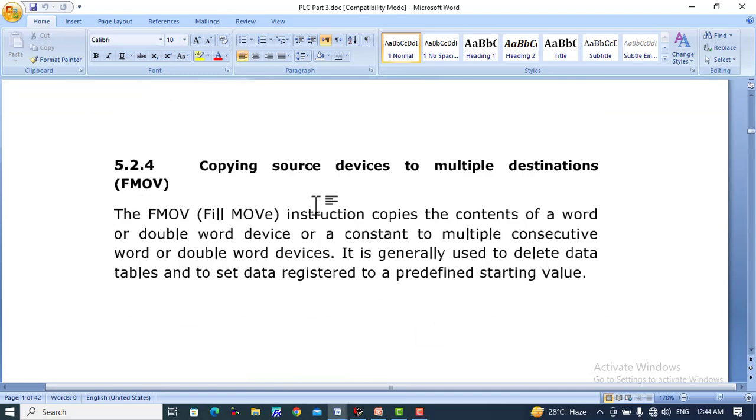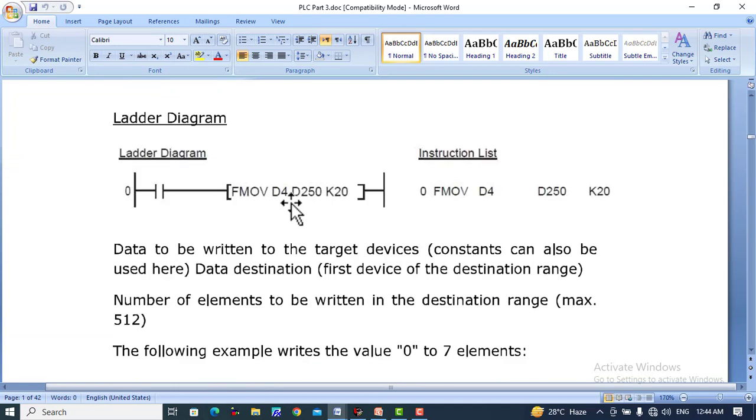Here in this block the similar case is: FMOV D4, the values in D4 register will be moved to the 20 destinations starting from D250 and so on.